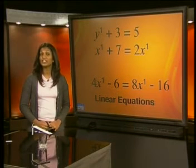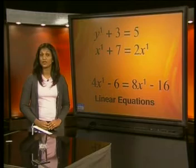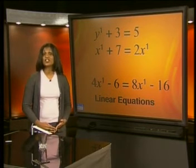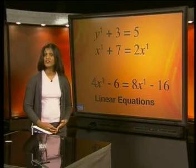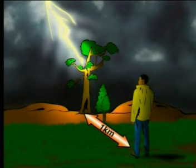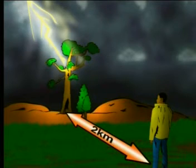Now that we know the definition of a linear equation, let's set one up using the following information. Can you calculate how far away lightning struck if you know how long it takes for the sound of thunder to be heard? The speed of sound is affected by temperature and humidity, but for a rounded off number, sound travels one kilometer in roughly three seconds. So when you see the flash of a lightning bolt, you can start counting seconds until the thunder strikes. If you hear the thunder within three seconds, the lightning struck one kilometer away; if it takes six seconds, the lightning struck two kilometers away.